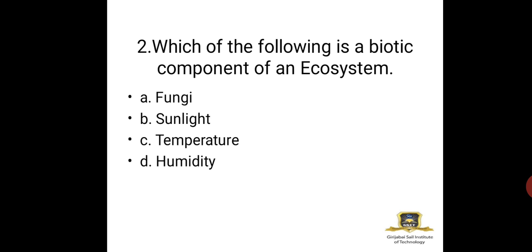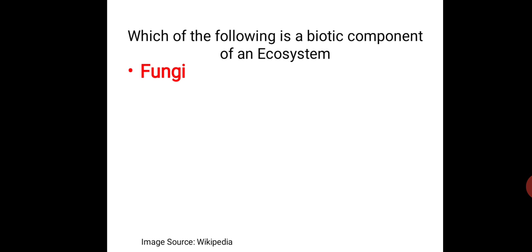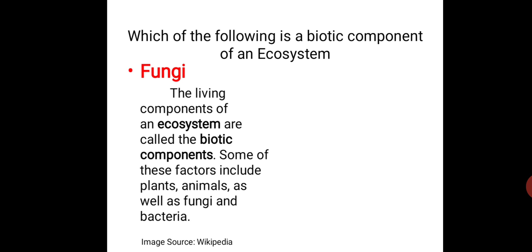Question 2: Which of the following is a biotic component of an ecosystem? Biotic means living; abiotic means non-living. The options are fungi, sunlight, temperature, and humidity. Sunlight, temperature, and humidity are all non-living (abiotic). Fungi is definitely living. So the answer is fungi. The living components of an ecosystem are called biotic components, and they include plants, animals, fungi, and bacteria.